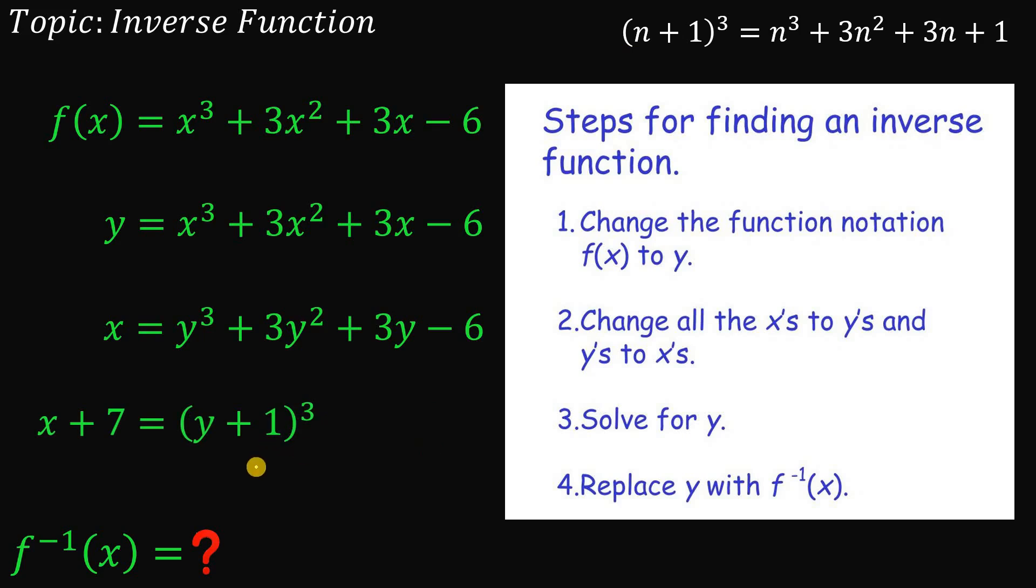Now we can now isolate the variable y. So let's cube on both sides. And the right-hand side is just y + 1. Now to isolate y or to solve for y, let's subtract 1 on both side. Therefore, y equals cube root of x + 7 minus 1. This is the third step.